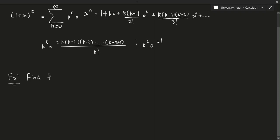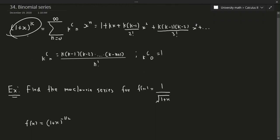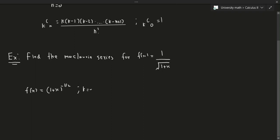Find the Maclaurin series for f(x) = 1 over the square root of (1 + x). This doesn't quite look like a binomial, but we can express it in binomial form. We write it as (1 + x) to the power of minus 1/2, because that is the same thing as the original using a negative exponent. So in this case, k equals minus 1/2.